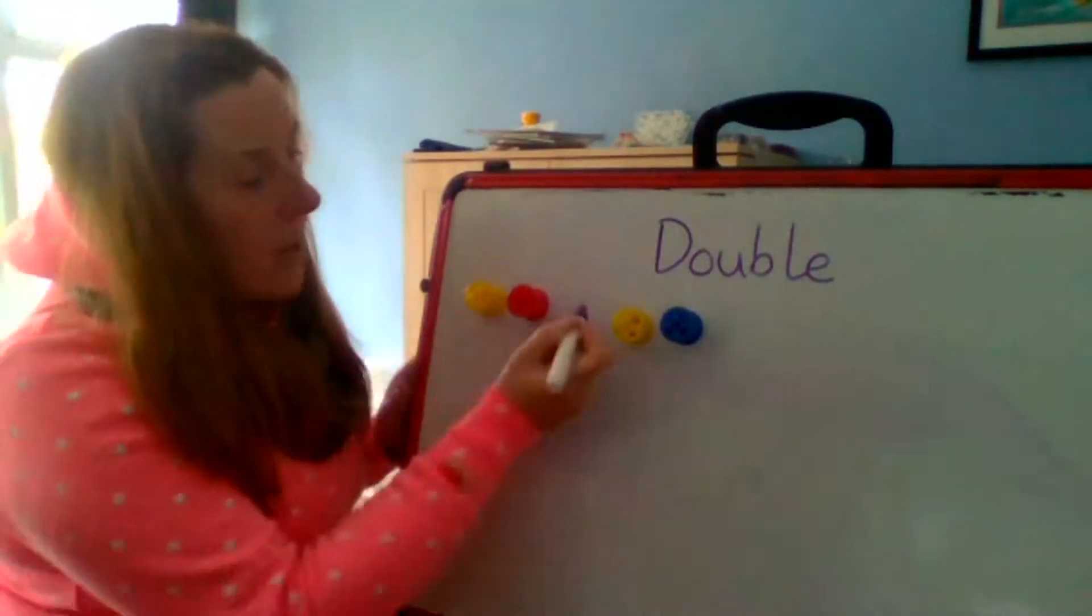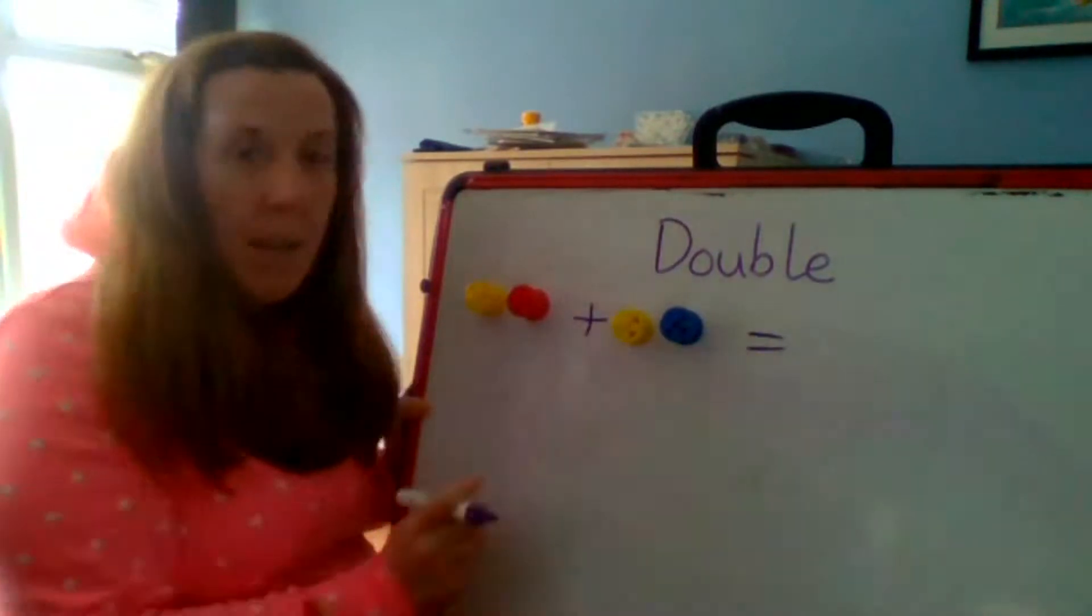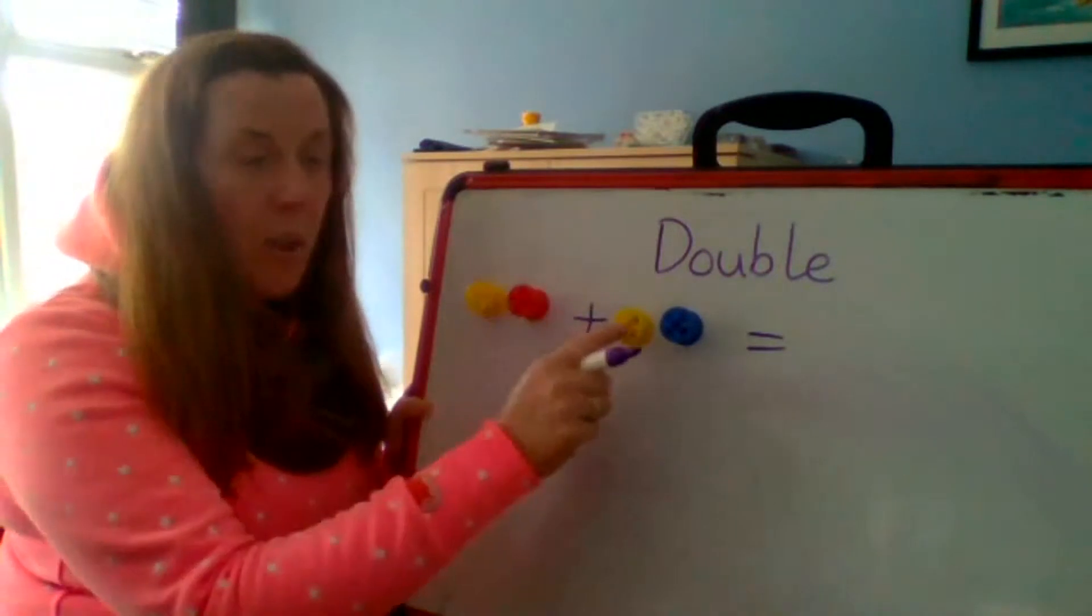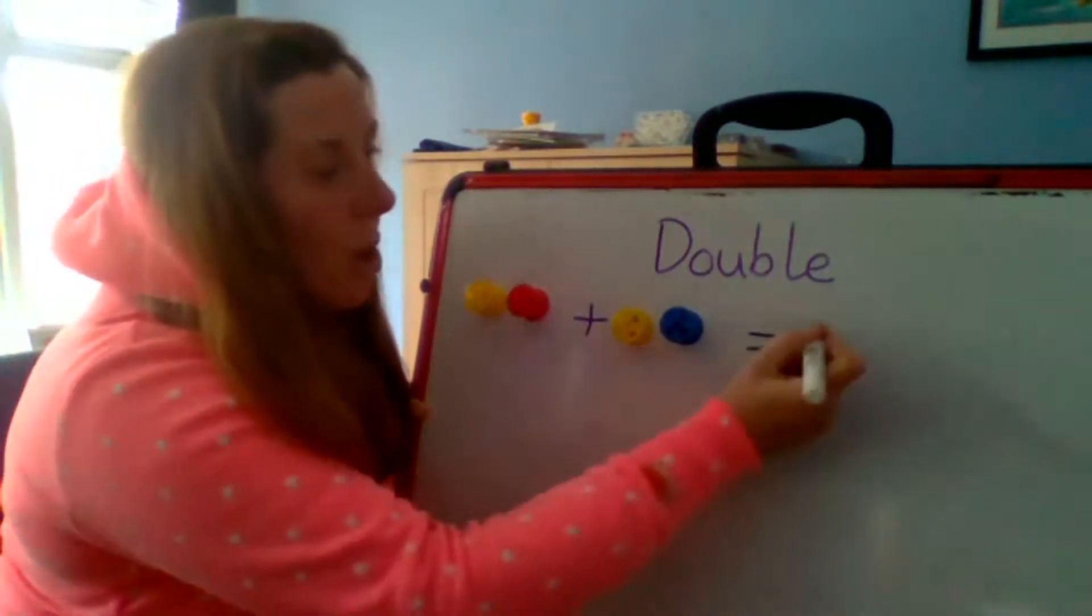So on this one, it would be two add two equals. How many does it equal? Should we count them? So double two is one, two, three, four. So double two is four. Well done.